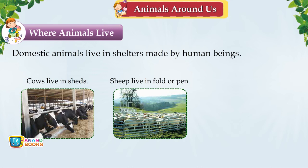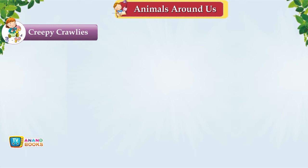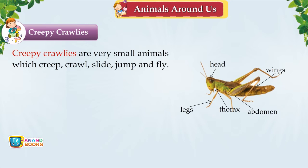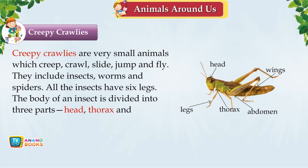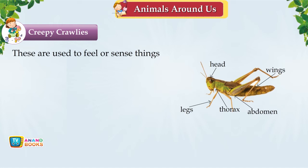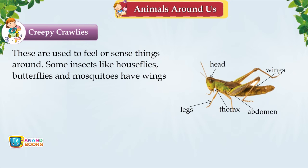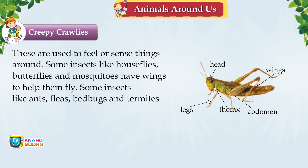Creepy Crawlies. Creepy crawlies are very small animals which creep, crawl, slide, jump and fly. They include insects, worms and spiders. All insects have six legs, and their body is divided into three parts: head, thorax and abdomen. They have a pair of feelers and antennae on the head. Some insects like house flies, butterflies and mosquitoes have wings; others like ants, fleas, bed bugs and termites have no wings.